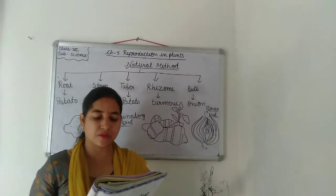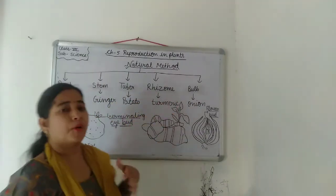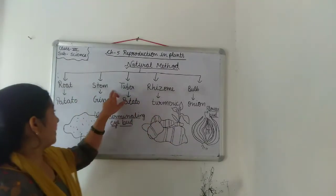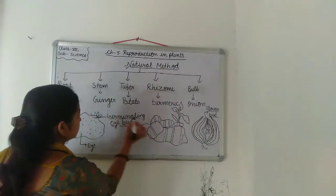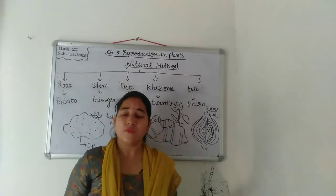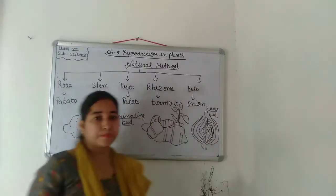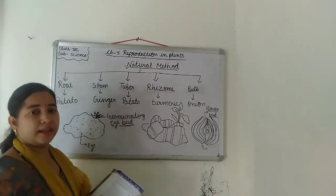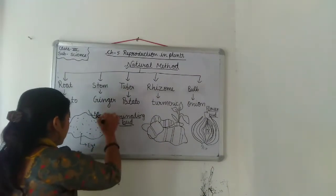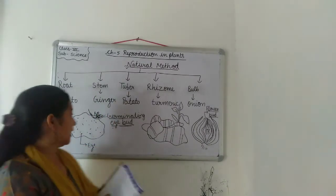Modified stems like tuber, bulb, rhizome, and corm help plants multiply — these are all modified stems. In potato, the germinating eye bud is visible as small black dots on the surface. After some time, small green leaves begin to appear on these eyes. If we cut the germinating part and plant it separately in soil, a new plant germinates. So this propagation is done by stem.